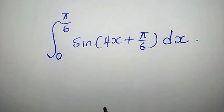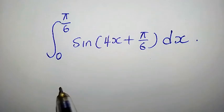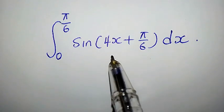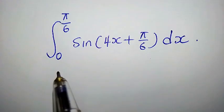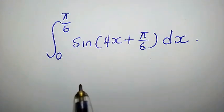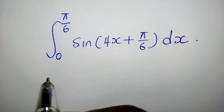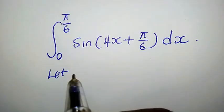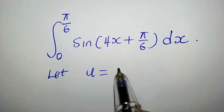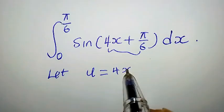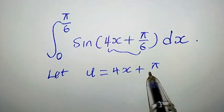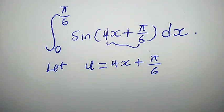Hello, welcome. Let's integrate this beautiful trigonometric function. How do we integrate sin(4x + π/6) with respect to x from 0 to π/6? First, let's suppose u equals 4x + π/6. We have to consider π/6 as a constant.